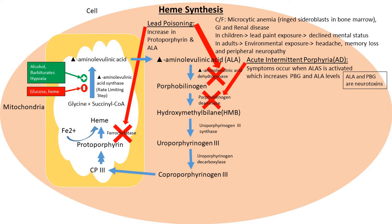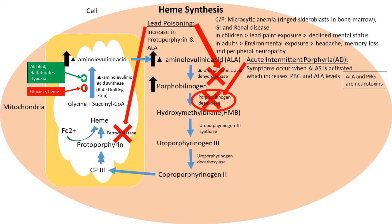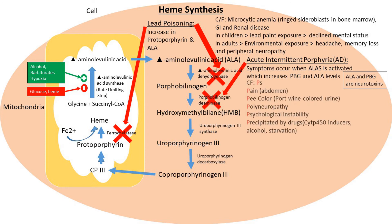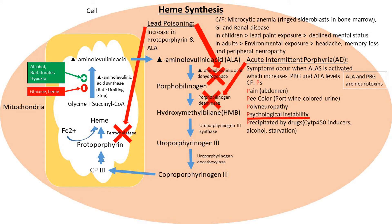ALA and PBG levels can increase if patients consume alcohol, because alcohol stimulates ALA synthase, increasing ALA levels and subsequently porphobilinogen. In AIP, PBG cannot be converted into HMB since the enzyme is deficient, so ALA and PBG accumulate. Symptoms include abdominal pain, port wine-colored urine (porphyrins change urine color), polyneuropathy (as ALA and PBG are neurotoxins), and psychological disturbances.